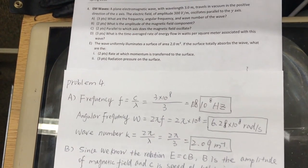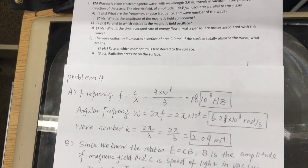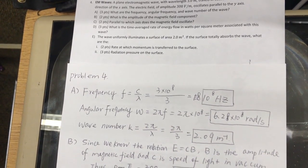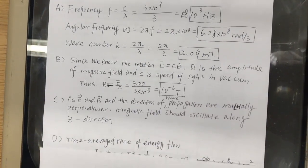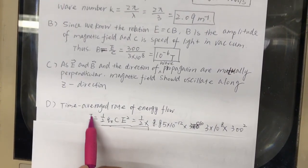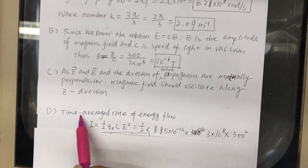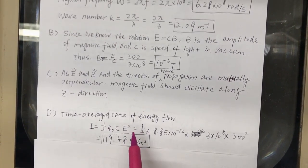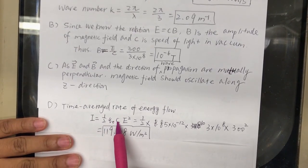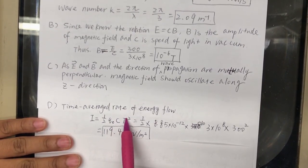What is the time average rate of energy flow in watts per meter squared associated with this wave? Another case of plug-and-chug. That would be s, this is s average, which is the average, time average rate of energy flow. One-half epsilon naught times the speed of light, electric field squared.